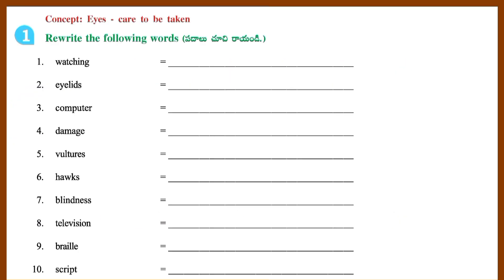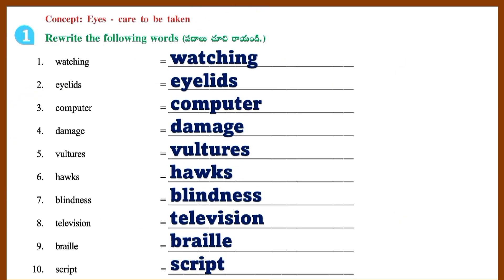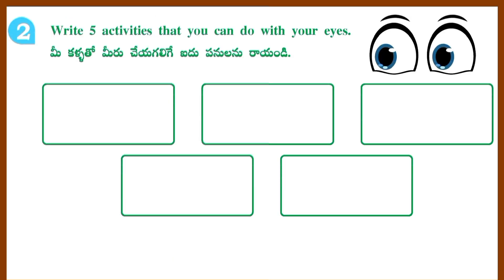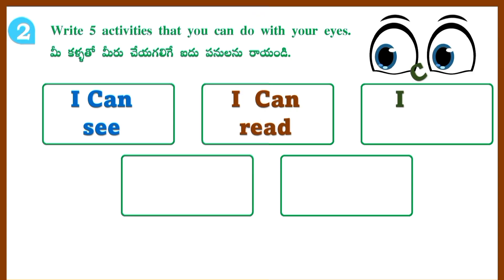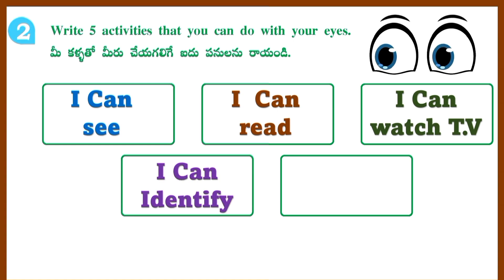Worksheet 2. Concept: Care to be taken. Rewrite the following words: Eyelids, Computer, Damage, Vultures, Hawks, Blindness, Television, Braille Script. Section 2: Write 5 activities that you can do with your eyes. Answer: I can see, I can read, I can watch TV, I can identify, I can recognize.